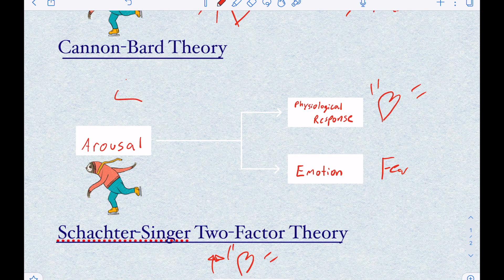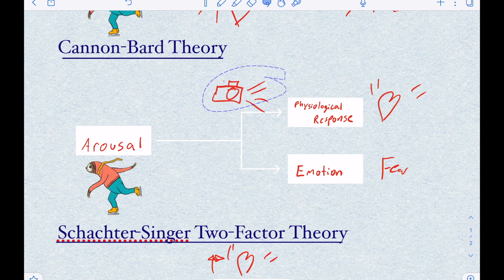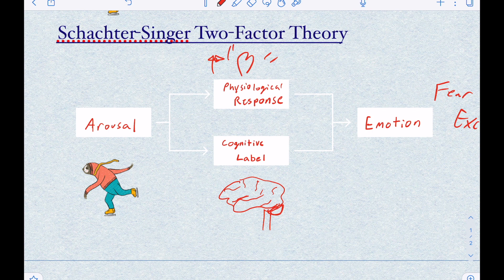When I think of the Cannon-Bard theory, I think of Canon, like the camera brand. Because if you're taking a picture of something, both things have to be happening at the same time to be in the same picture. So that's how I remember Cannon-Bard — both of these are happening at the same time, because I can take a picture of it.